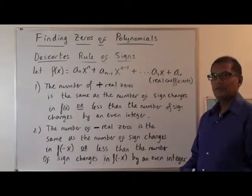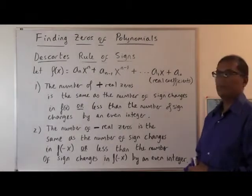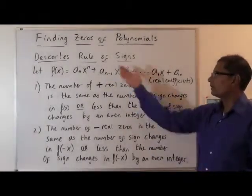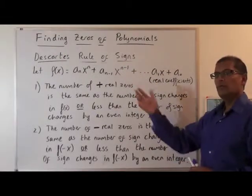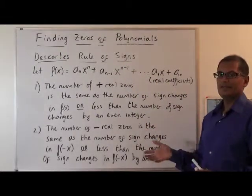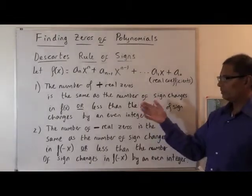There is one more theorem that allows us to put together the puzzle to find polynomial zeros and that's Descartes' Rule of Signs. And this rule is actually easier to demonstrate than explained, but let's go through it.